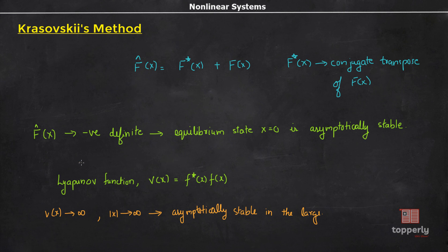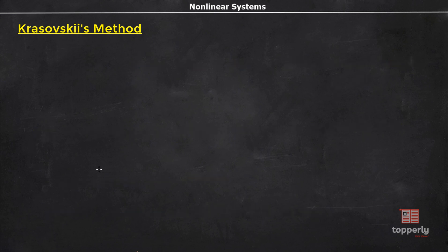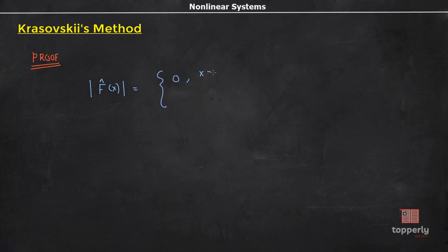So, that is Krasovsky's theorem. If F̂(x) is negative definite, then the equilibrium state at x = 0 is asymptotically stable. But why so? We will see the proof. If F̂(x) is negative definite for all x, then the determinant of F̂(x) is non-zero everywhere except at the origin. That is, det(F̂(x)) = 0 at x = 0 and non-zero at x ≠ 0.